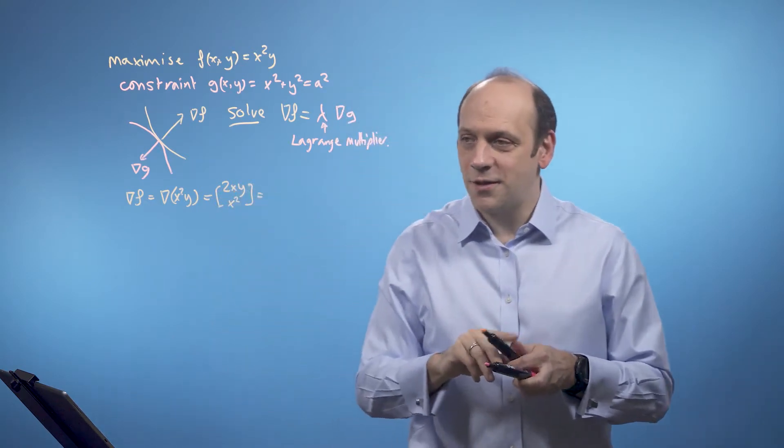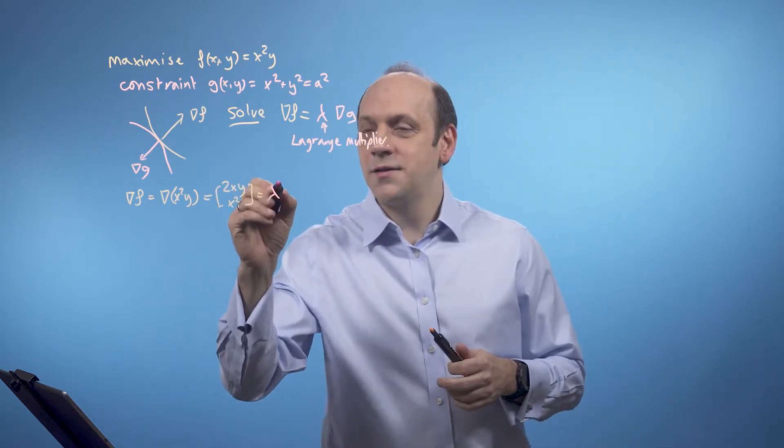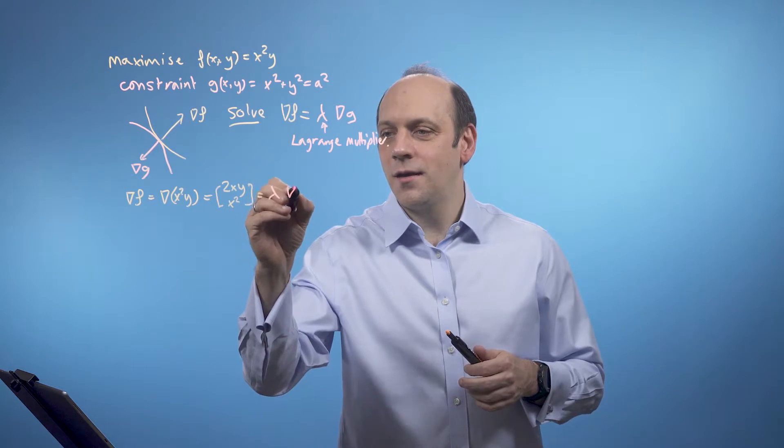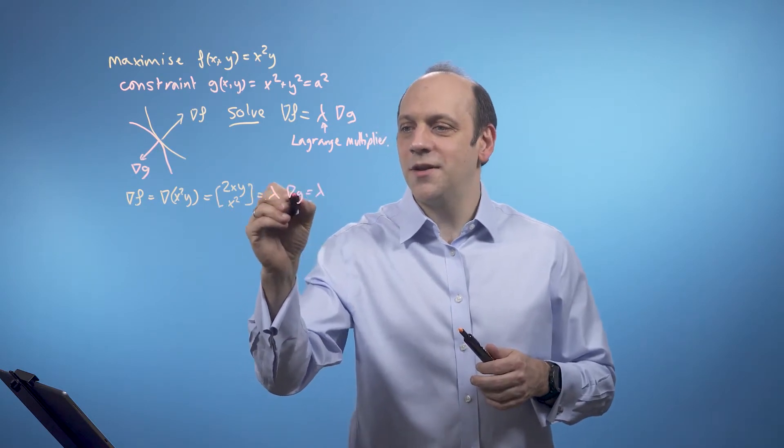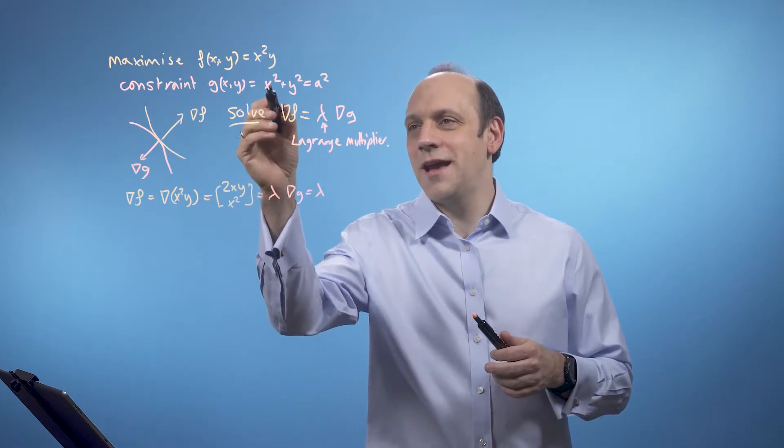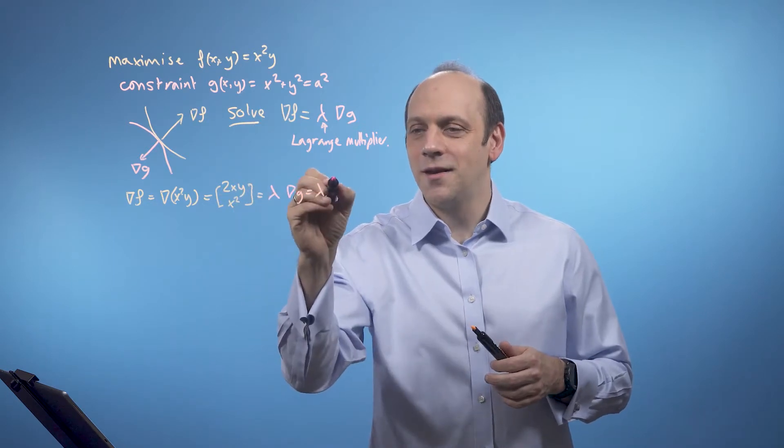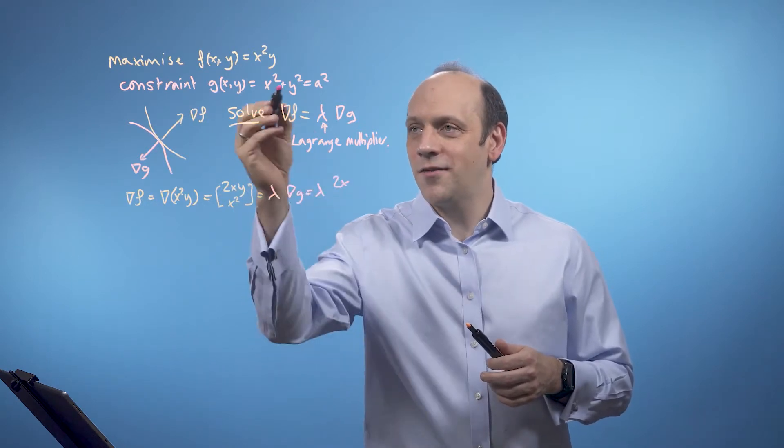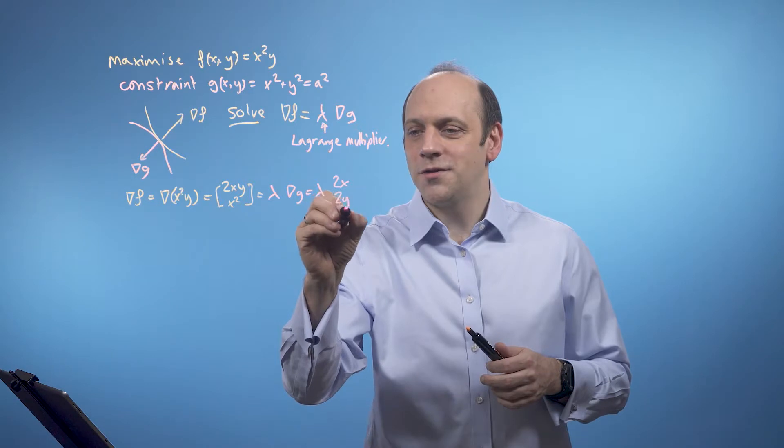And I'm saying that that's equal to lambda times grad g, which is equal to lambda times, if I differentiate g x squared plus y squared with respect to x, I've got 2x. And if I differentiate it with respect to y, I've got 2y.